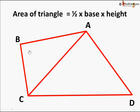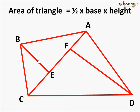We know the area of a triangle is half base into height. For triangle ABC, we draw a perpendicular line from vertex B to its opposite side AC. This perpendicular BF is the height of triangle ABC, and its base is AC — the diagonal of the quadrilateral. So the area of triangle ABC is half of B into AC.